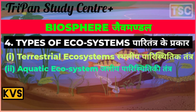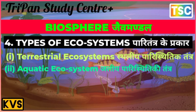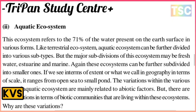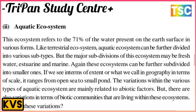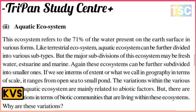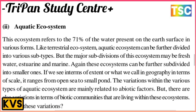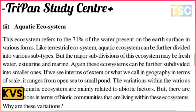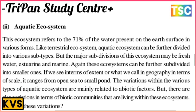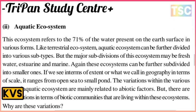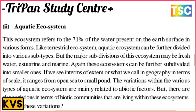The aquatic ecosystem refers to the 71% of water present on Earth's surface in various forms. Like the terrestrial ecosystem, it can be further divided into various subtypes: fresh water, estuarine, and marine. These range in scale from the open sea to a small pond. The variations within the various types of aquatic ecosystems are mainly related to abiotic factors — the limiting factors being the depth to which sunlight can penetrate, the availability of nutrients, and the concentration of dissolved oxygen. Estuarine ecosystems are the most productive of the aquatic ecosystems.